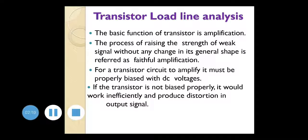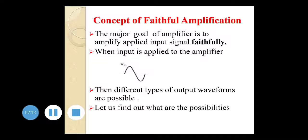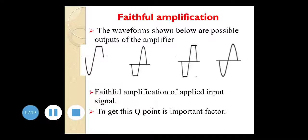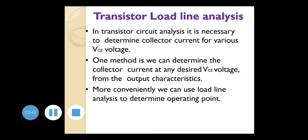We have studied faithful amplification: if the input is an AC signal, the positive half cycle and negative half cycle should both be proper. If any half cycle is cut, that is called distortion. Amplification means the output has the same shape as the input — that is faithful amplification. To get proper amplification and to make the transistor work in proper active mode so that you get a proper output signal, you need a transistor load line.